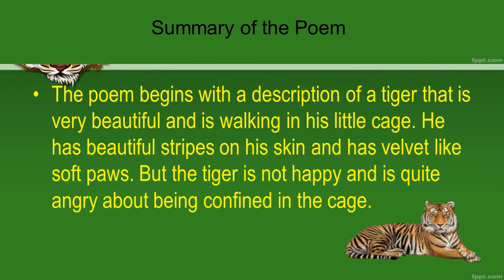The poem begins with a description of a tiger that is very beautiful and is walking in his little cage. In the first stanza, as given in your book: 'He stalks in his vivid stripes the few steps of his cage on pads of velvet quiet in his quiet rage.' The poet describes the appearance of the tiger — he has beautiful stripes on his skin and velvet-like soft paws. The last two lines describe the gesture of the tiger.